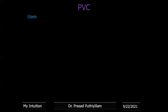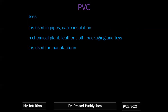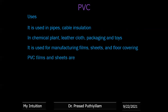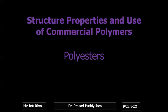PVC is used in pipes, cable insulation, chemical plant equipment, leather cloth, packaging, and toys. It is used for manufacturing films, sheets, and floor covering. PVC thin films and sheets are used in rain coats, handbags, shower curtains, and food covers.